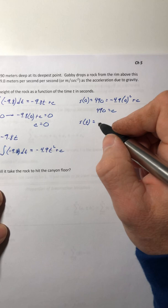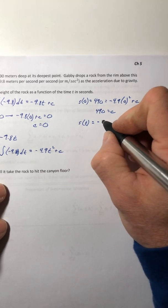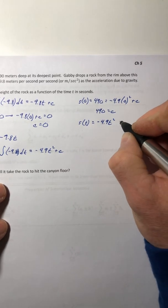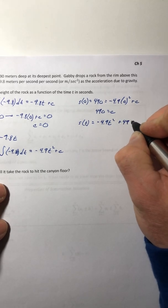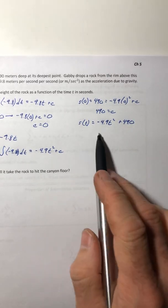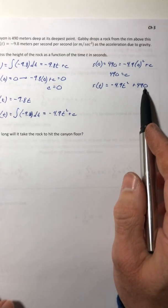So your position function is negative 4.9 T squared plus 490. So that is the height of the rock as a function of T.